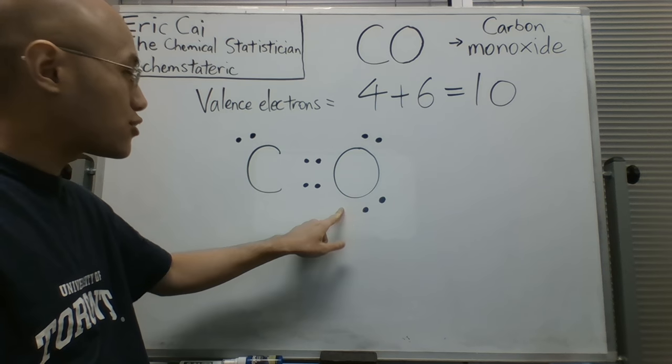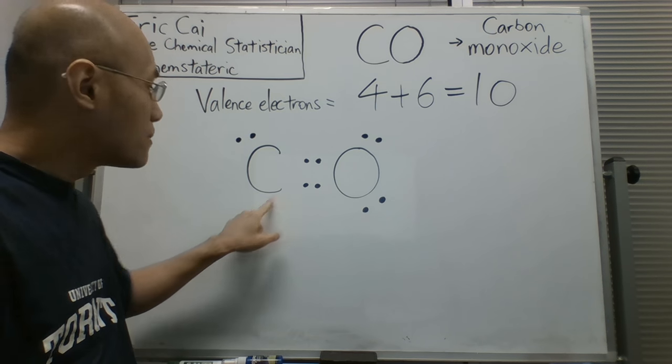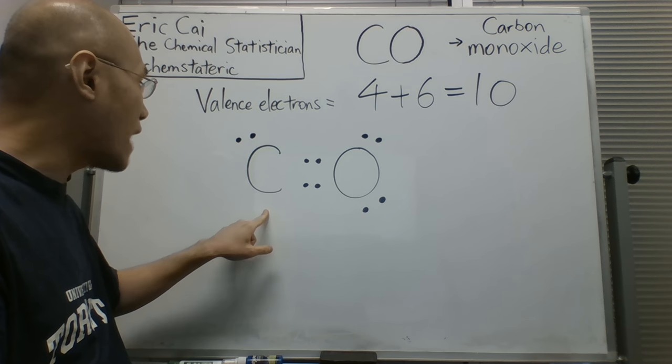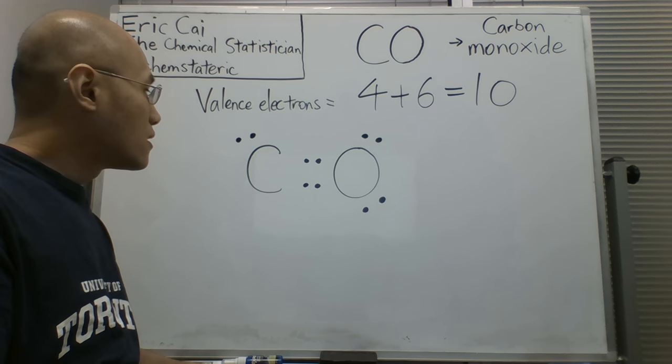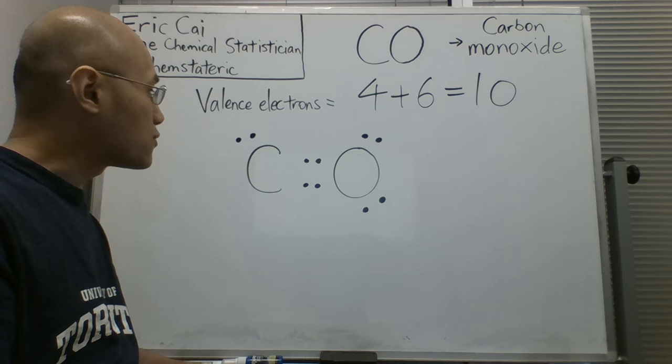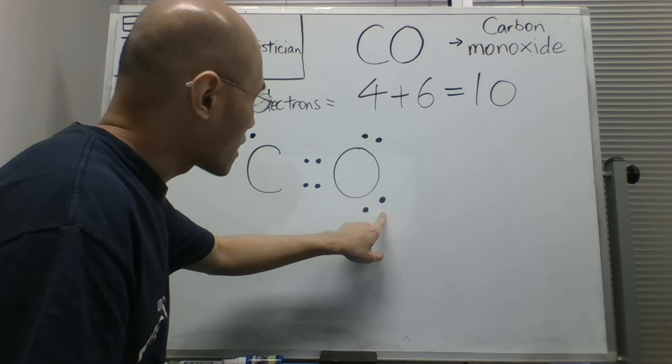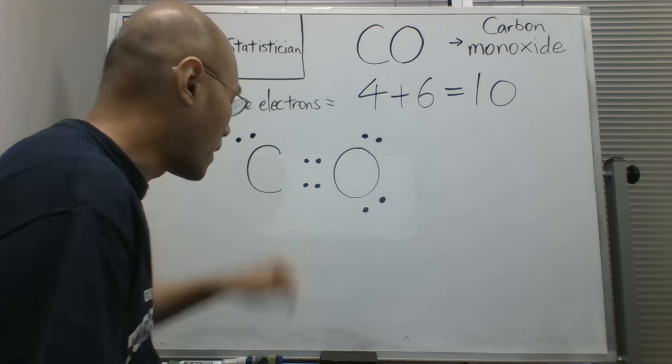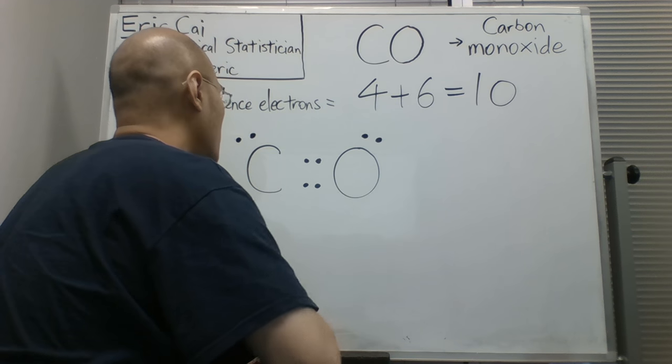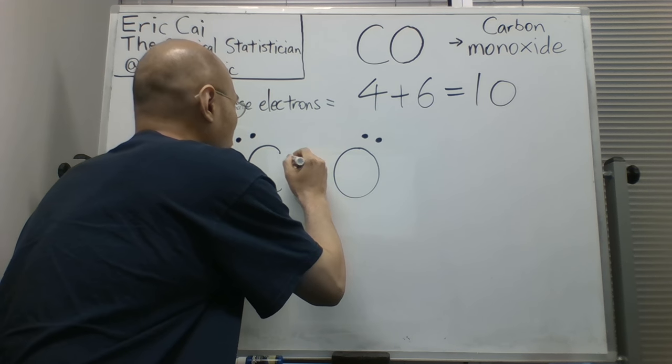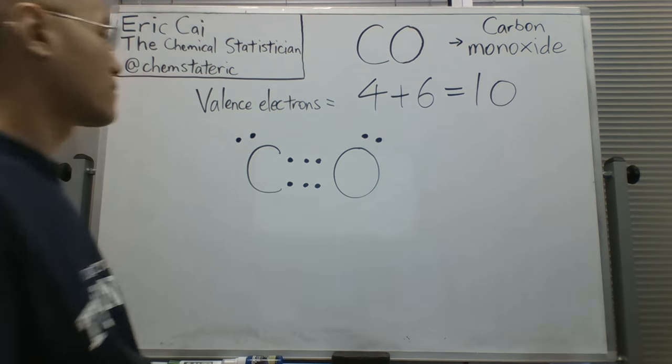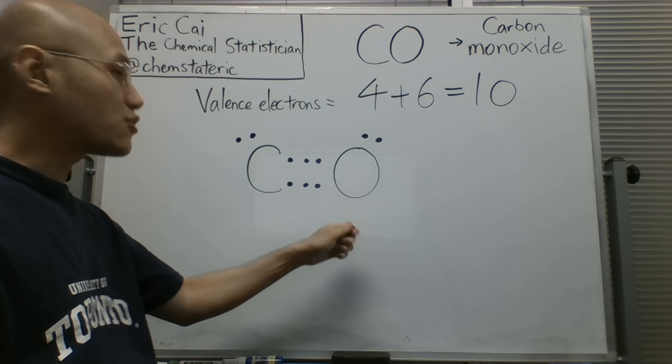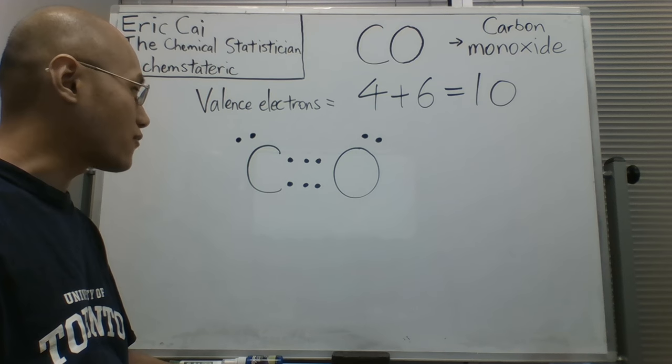So now the oxygen has a stable octet, but the carbon does not. The carbon still has six electrons. So we need to move another pair of electrons from the oxygen to the bond. That will give us a stable octet for the carbon. The oxygen still has a stable octet, of course.